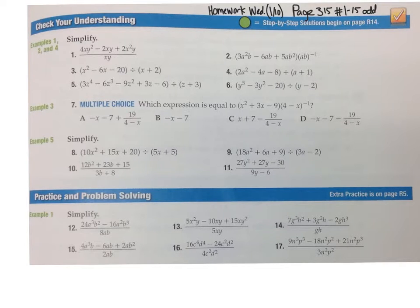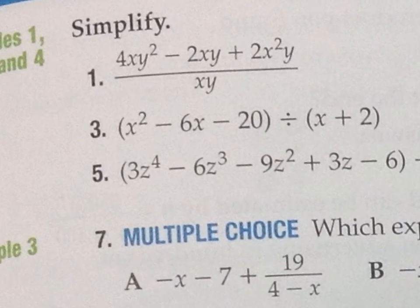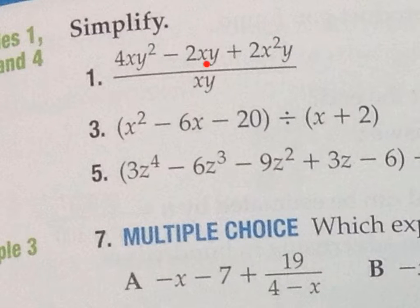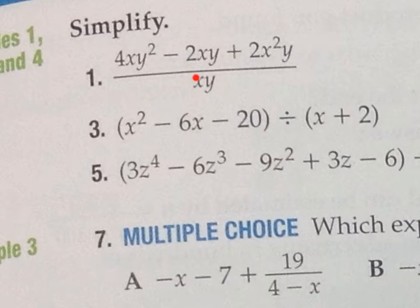Jumping to page 315 — this is our actual homework. We're going to do numbers 1 through 15 odd. Looking at number 1, we have a polynomial divided by a monomial. Are we going to do long division here? Heck no. What are we going to do? We're going to take this xy and put it under the first term, under the second term, and under the third term, and then just cancel and we'll be done. So let's split the xy to each of those three terms.